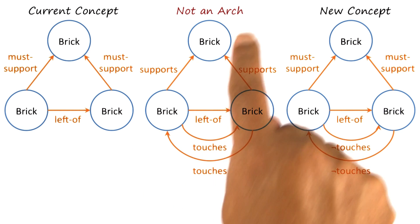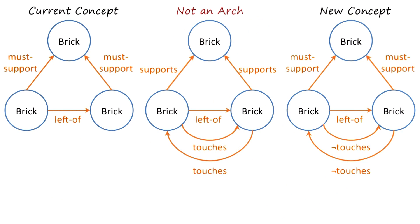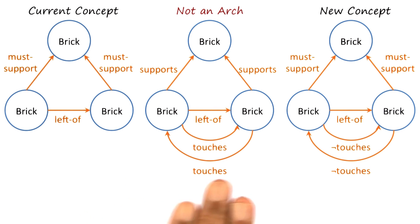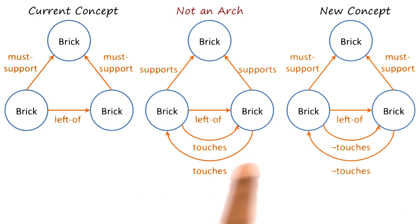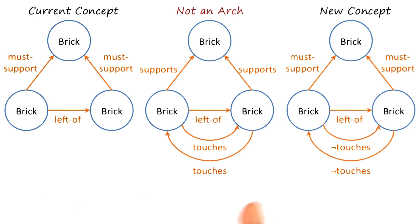The revision was such that the new concept characterization was a specialization of the old, such that the example got excluded. So negative examples led to specialization, and positive examples led to generalization. The ordering of these examples was important — we want the first example to be a positive example of the concept to be learned, and we want the order to include both positive and negative examples.